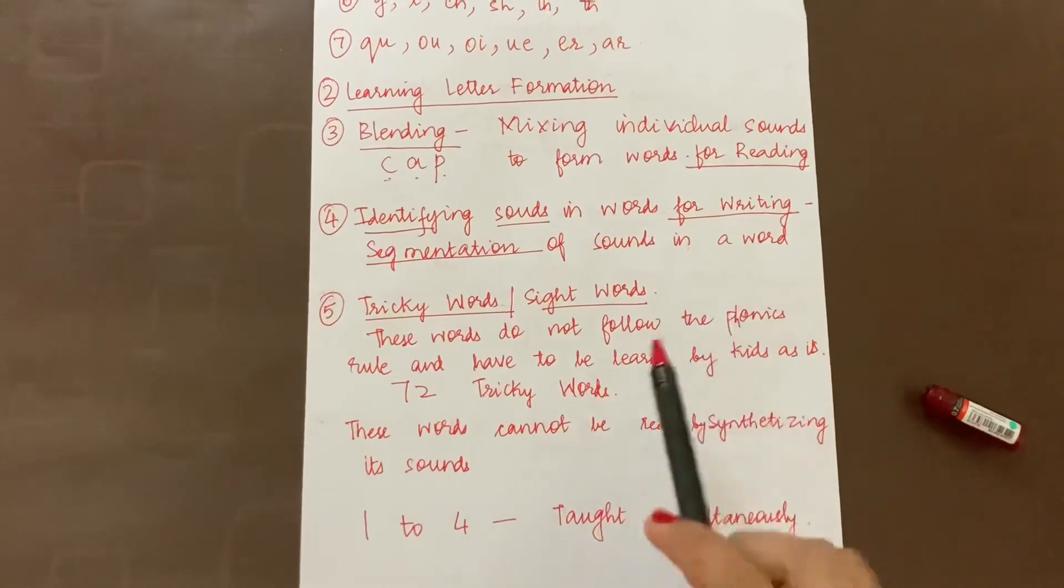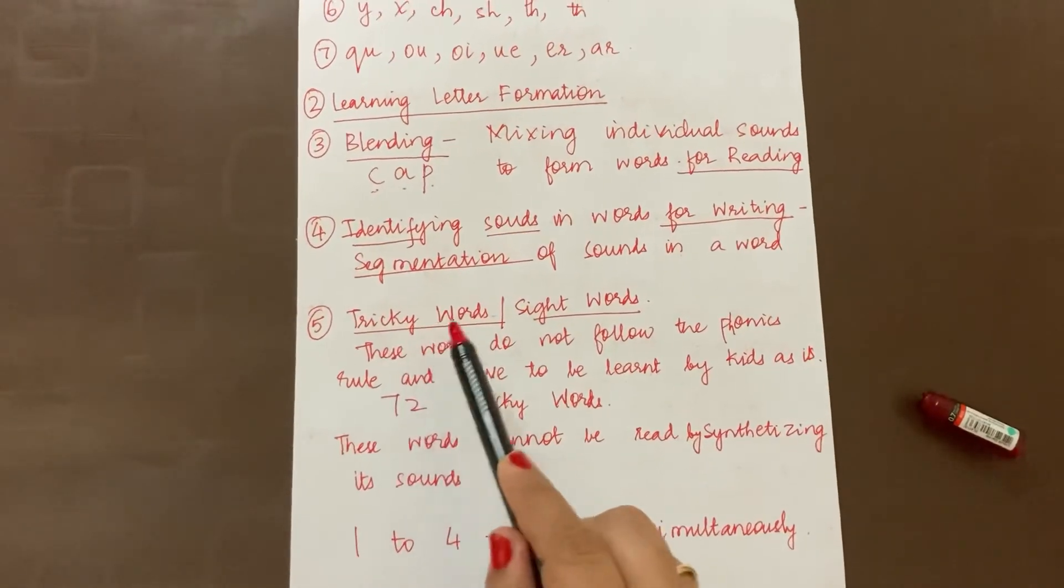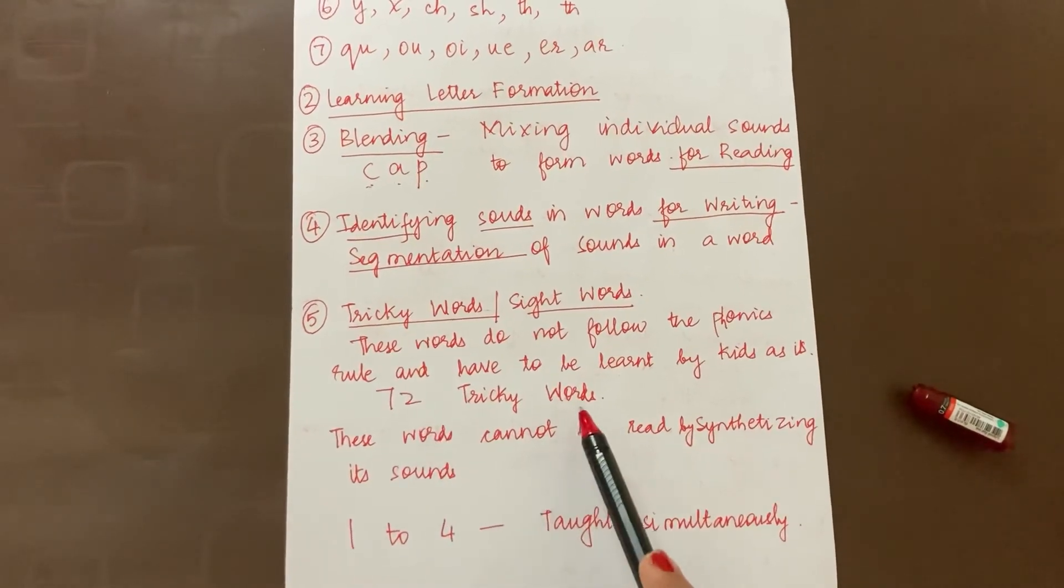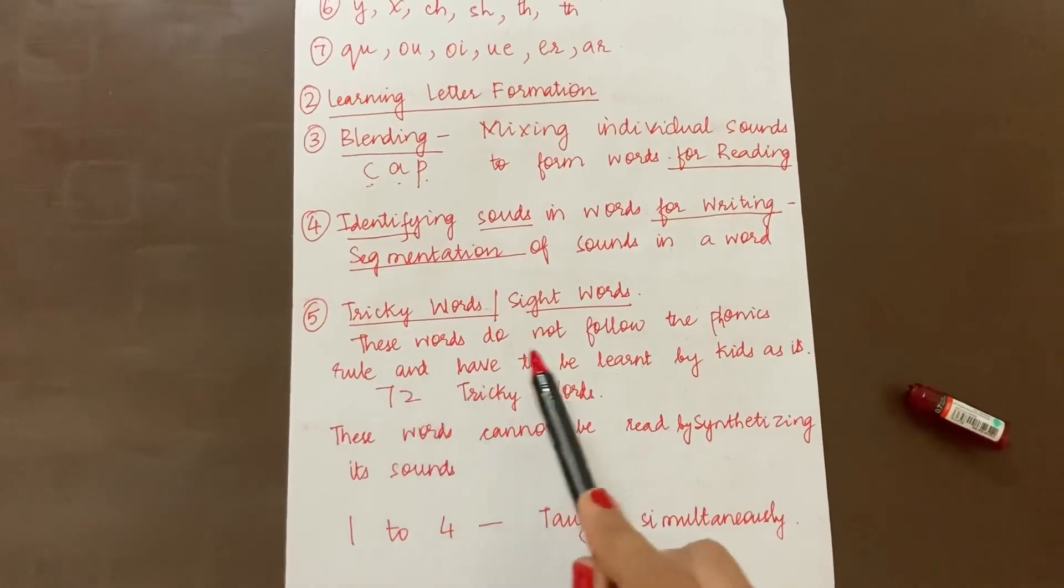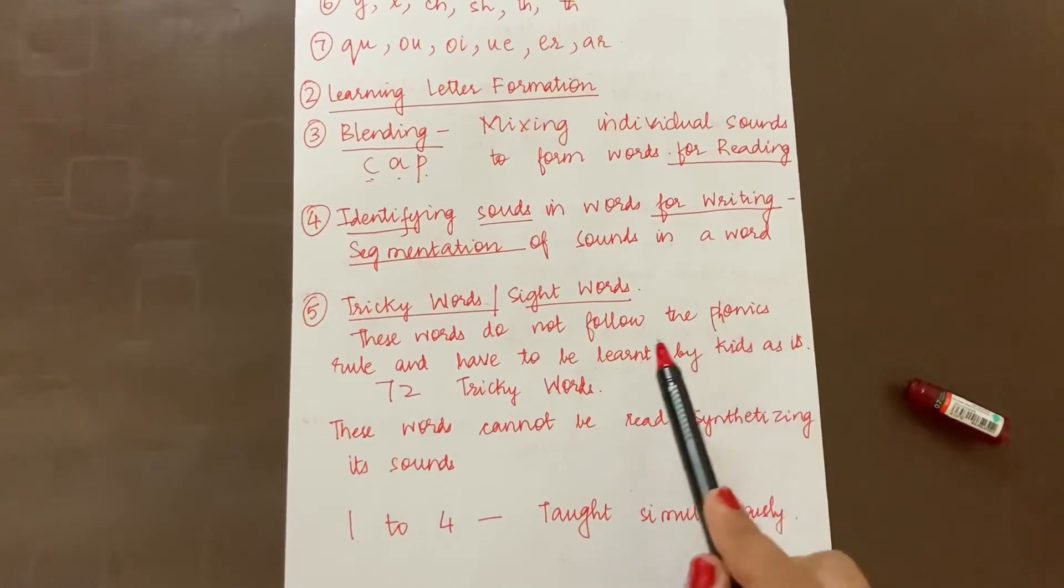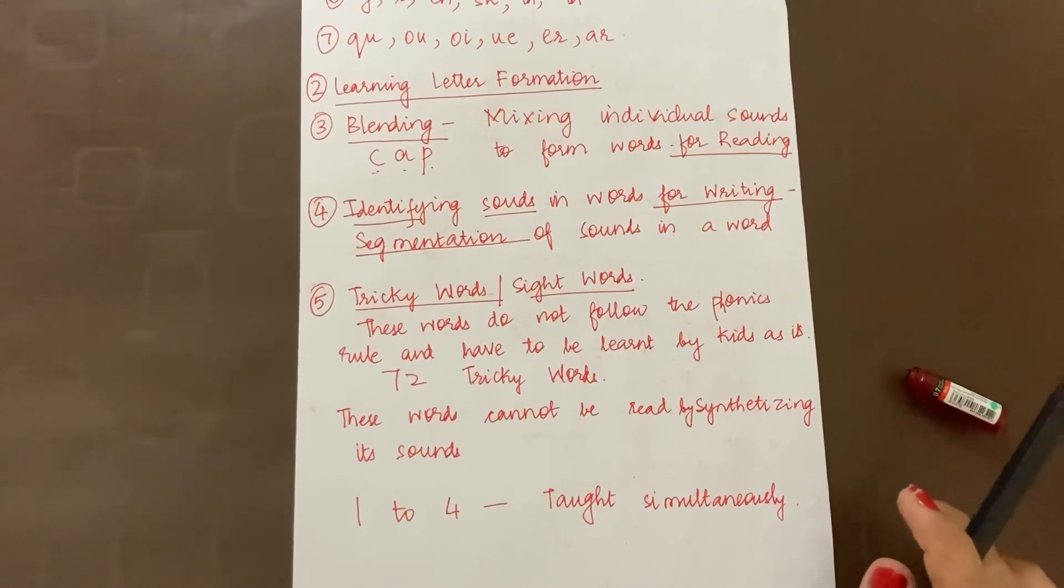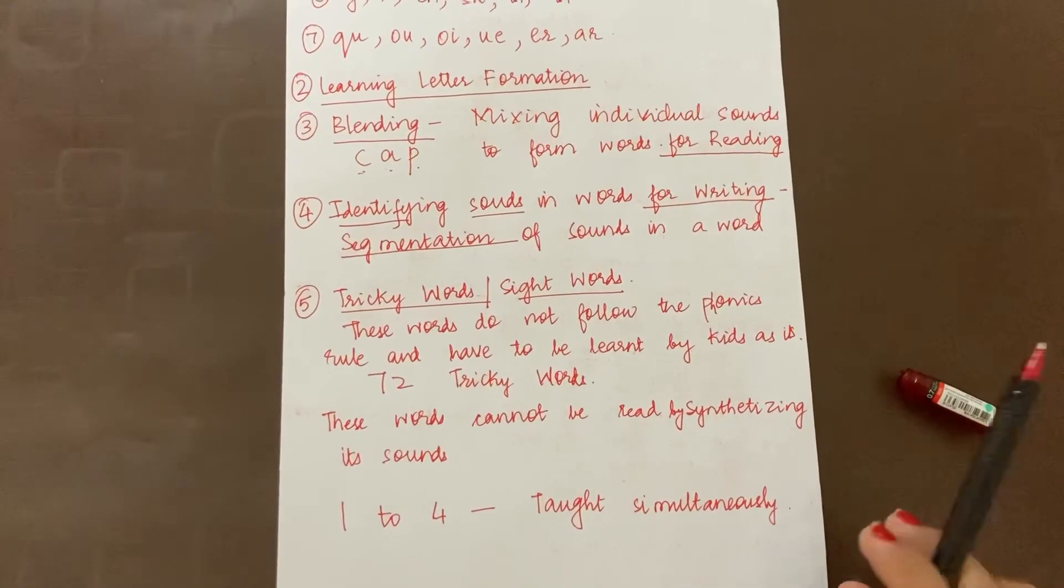Then the fifth part is called tricky words or the sight words. These are 72 tricky words. These words do not follow the phonics rule and they have to be learned by kids as is. They cannot be read by synthesizing its individual sounds.